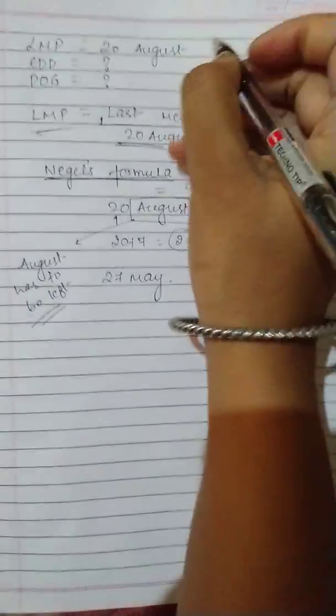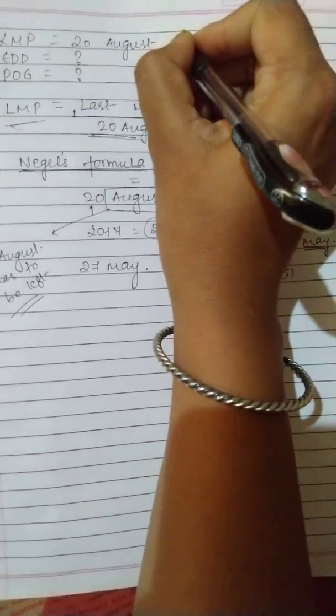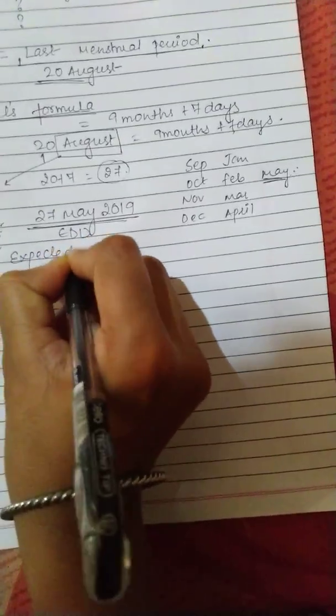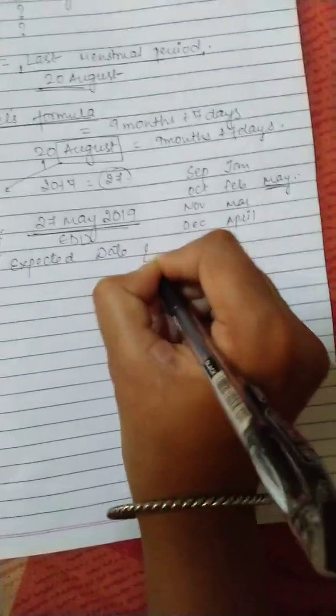I'm so sorry I have not mentioned here the year. Aap assume kar sakte suppose yeh 2018 tha. Toh ab jo hai woh dusre month ka a gaya thik hai. Toh main yaha pe kya karungi, 2019 ho gaya. Toh ye ho jayega aapka EDD.